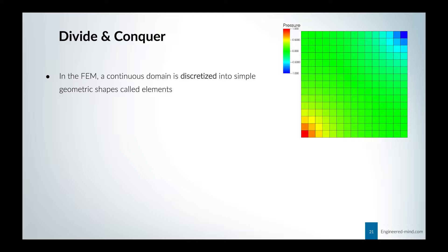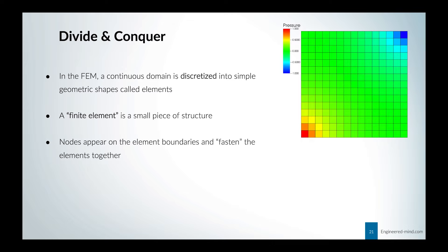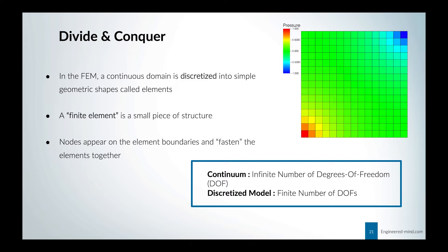So what is the divide-and-conquer approach? Imagine you have a rectangle and you discretize it by subdividing it into smaller pieces. This so-called discretization of a bigger part into smaller parts is called a mesh, and the mesh consists of these small elements. A finite element is a small piece of a structure — we don't have an infinite amount of elements, we have a finite, fixed amount. We often talk about nodes, and these nodes basically fasten the elements together. A continuum has an infinite number of degrees of freedom; a discretized model has a finite amount.